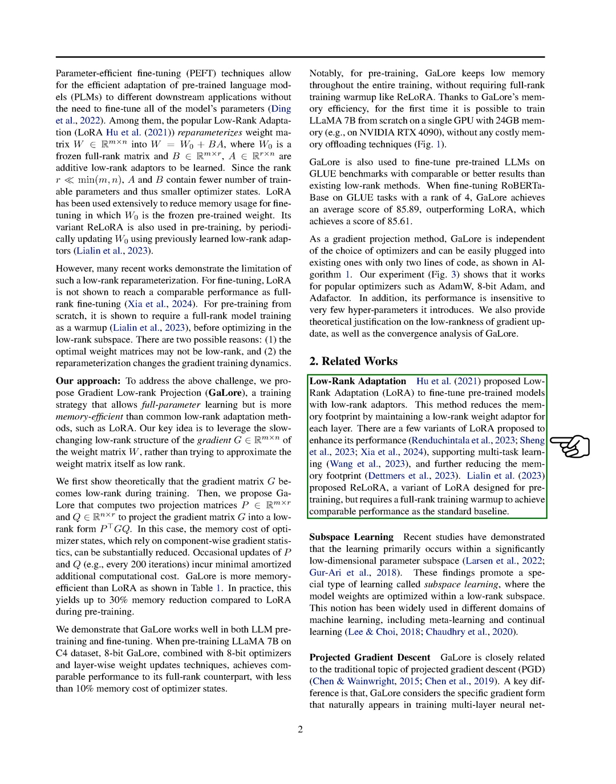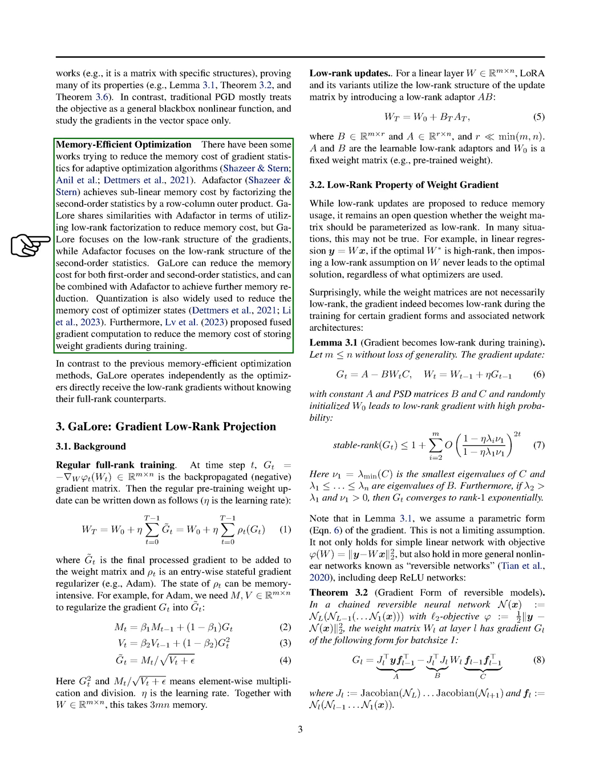GaLore is related to Projected Gradient Descent, PGD, but focuses on the specific gradient form that arises in training multilayer neural networks, unlike traditional PGD which treats the objective as a general non-linear function. GaLore leverages low-rank factorization to reduce memory usage for both first-order and second-order statistics, similar to Adafactor, but with a focus on the low-rank structure of gradients.